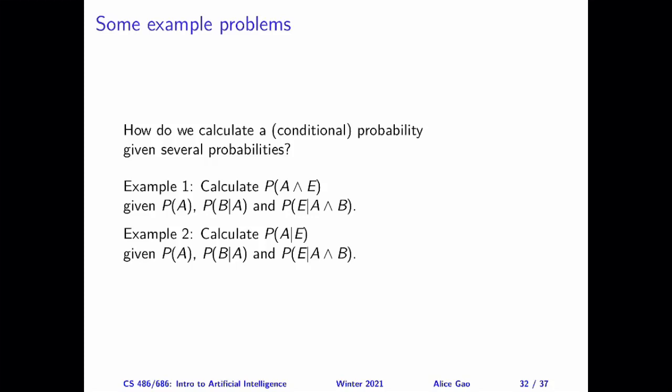Let's look at some example problems. Suppose that we have three Boolean variables: A, B, and E. Any probability calculation problem you can come up with using a set of variables belongs to one of two categories. In the first category, we want to calculate a joint probability. In this example, we're calculating a joint probability over A and E. This probability may involve all the variables, but in this case it only involves some of the variables.